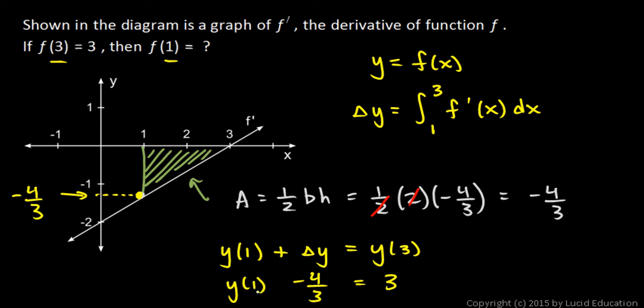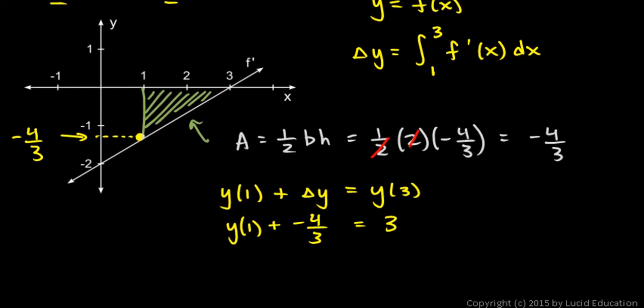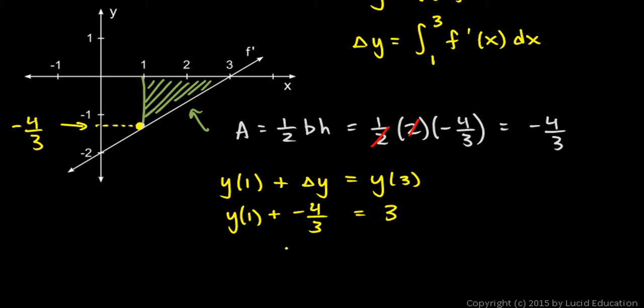So y at 1, we can find this algebraically. Just solve this little equation. So just add 4 thirds to each side. y at 1 is 3 plus 4 thirds. And 3 is 9 thirds. Plus 4 thirds will be 13 thirds.